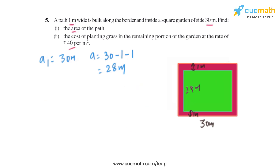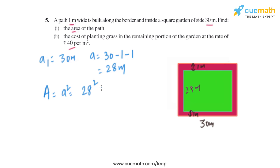For the second part, we need to plant grass in the remaining portion of the garden, excluding the path — that is the green portion, or the area of the smaller square. The formula for the area of a square is side squared, and the side is 28 meters, so it's 28² which equals 784 square meters.